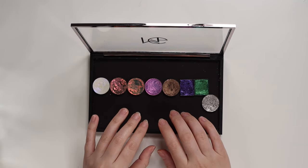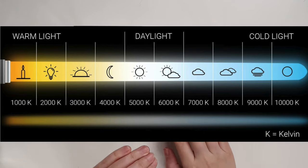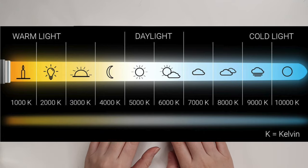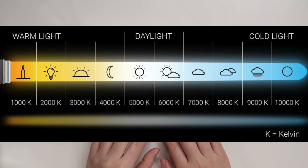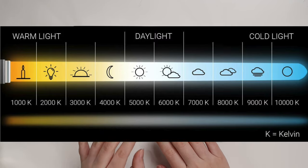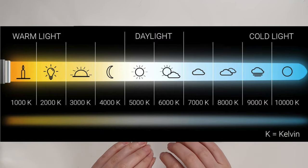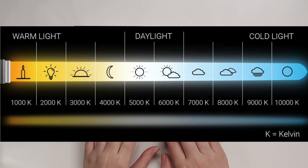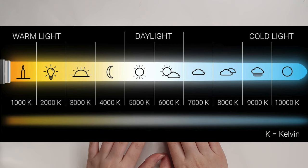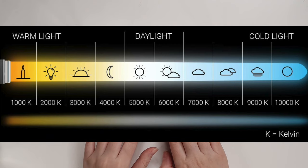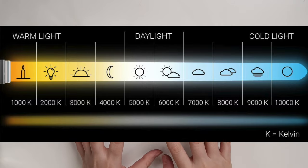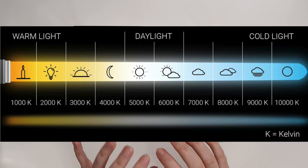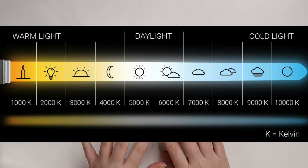Light temperature is measured in Kelvin, and it goes from 2,000 to 10,000 Kelvin. Around 2,000 is considered warm light, then going up to soft white at 3,000 Kelvin. It starts to get more neutral and definitely more blue as you go to 5,000, which is the daylight temperature. Going further up is 7,000 to 8,000, which is much cooler — a lot more blue overtone versus the yellow and orange in the 2,000K range. All the way to 10,000, it's really, really cool.